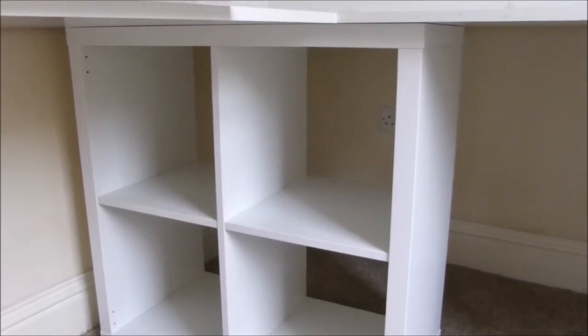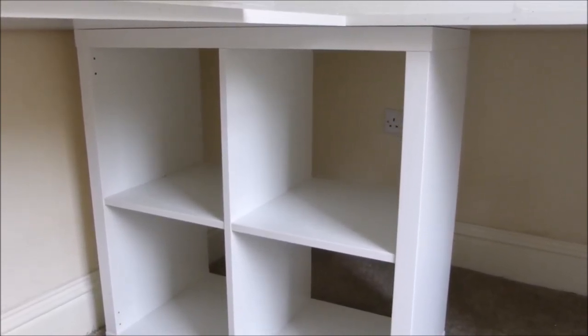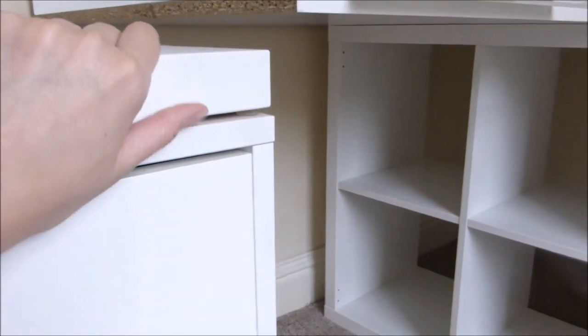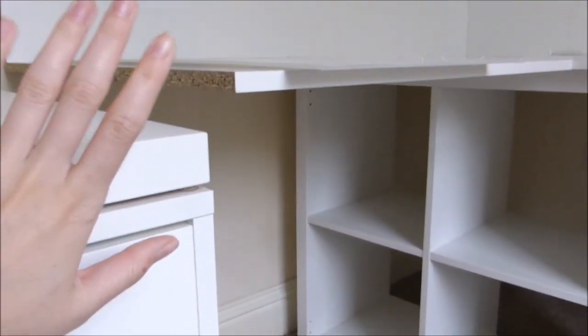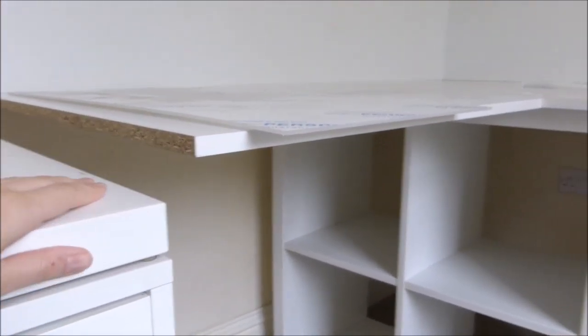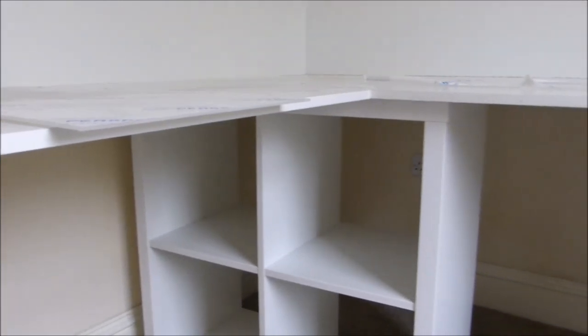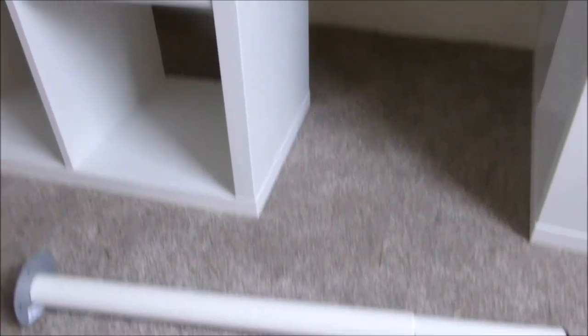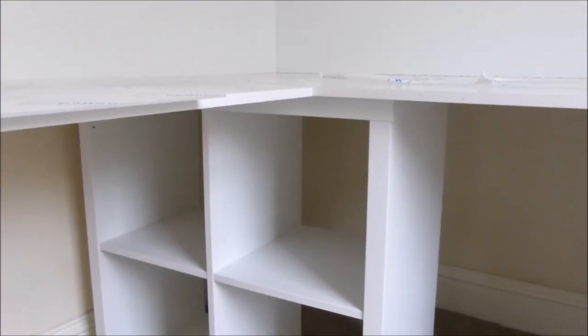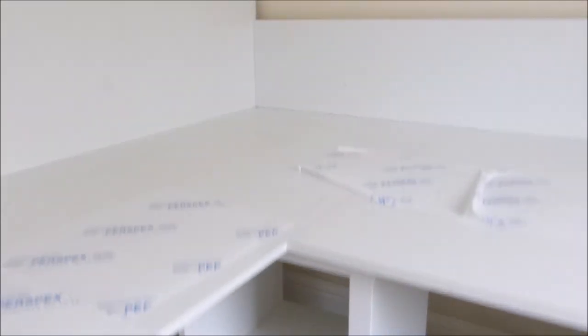You might recognize these. They are the Kallax shelving units that you can get from Ikea and they really match the furniture that I've already got in this room and that's another reason why it's all this white wood because everything matches. So we've got two of those that might go one here I think and one at that other end, and then we've also got some of these legs which I think are going to go in as extra supports to hold the thing up.